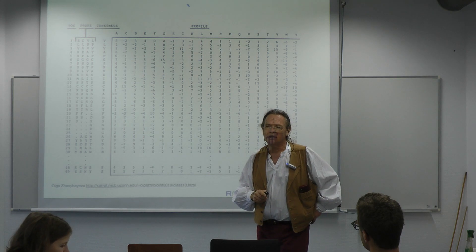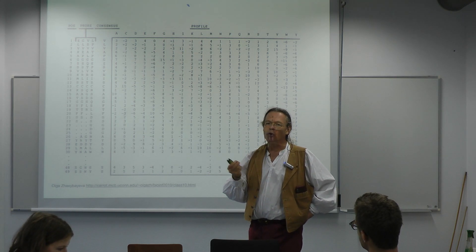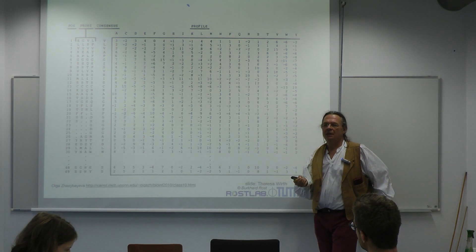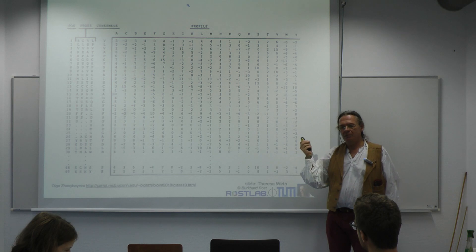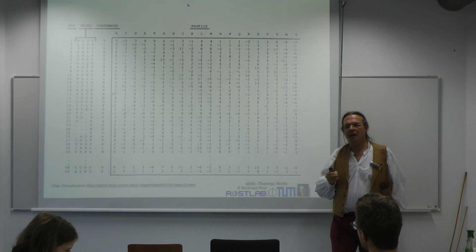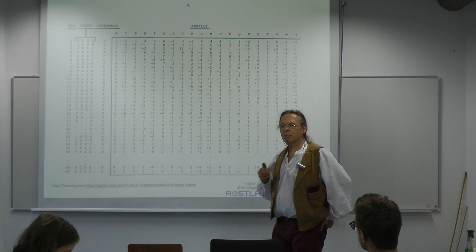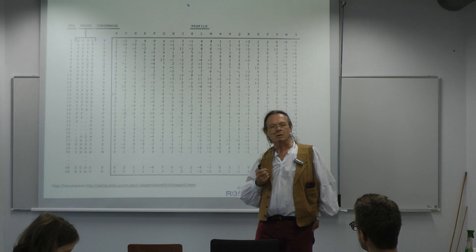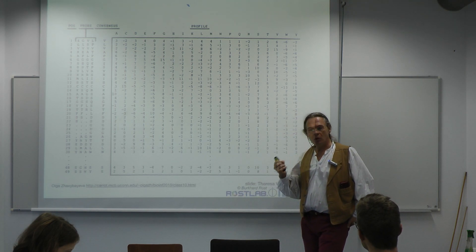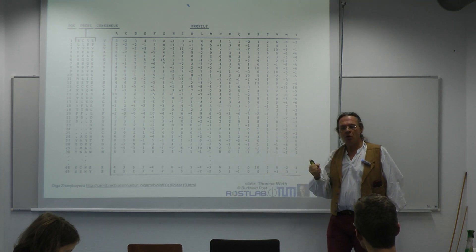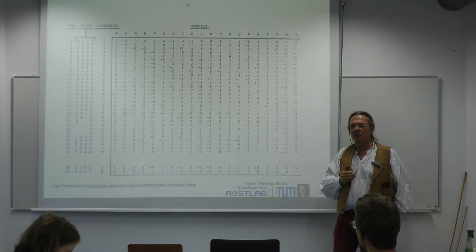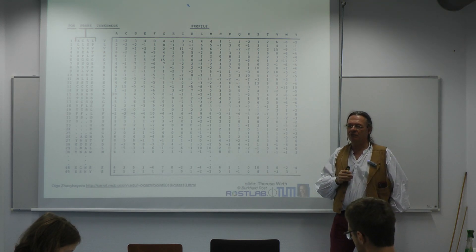Aligned to it in this context essentially means a grouping. You imply with displaying the alignment like that, you always imply a grouping. You imply that this is what people call a family, or that these three sequences are above some similarity threshold that would allow you, for instance, homology-based inference.